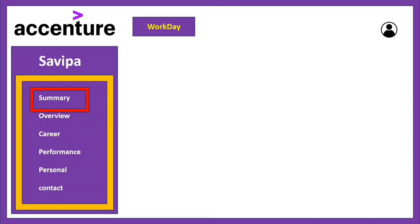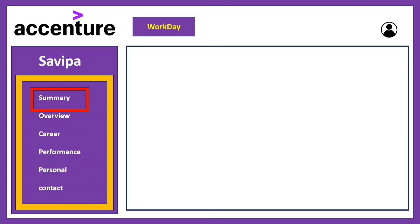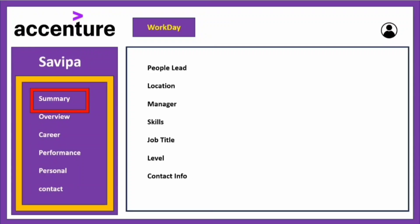The first section is Summary. Here you can see your People Lead — many people ask me where to find their HR or POC, and this is the section. You can also see other details like your location, your manager, skills you are good at, job title, management level allocated to you, and your contact info. This is the section to find your People Lead.